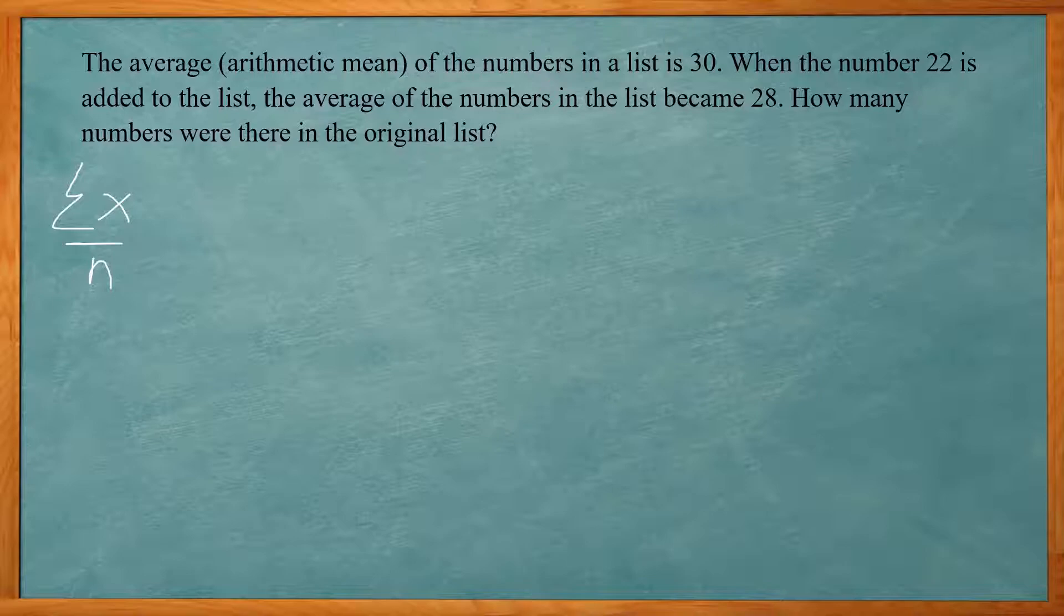So if there was an average of 30, the total on top would be 30x. So 30 times how many numbers were in the list. Now we're going to add the number 22 to it. And now how many do we have? We had originally x and we added one more. So there's going to be a total of x plus 1. And after adding the 22 to the list, the average became 28. So that's our formula. 30x plus 22 divided by x plus 1 equals 28.